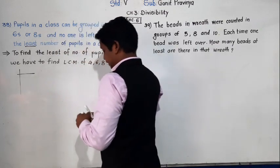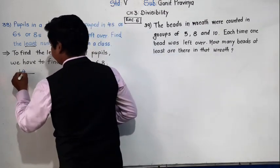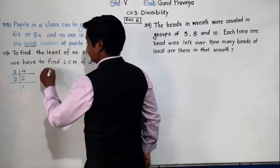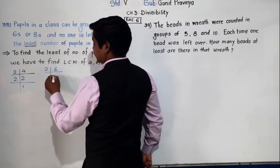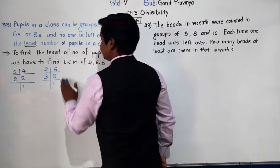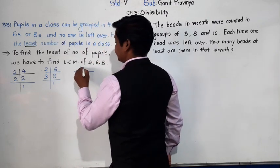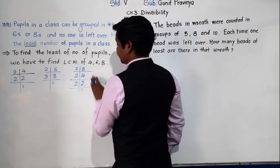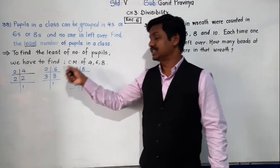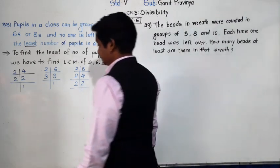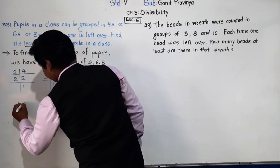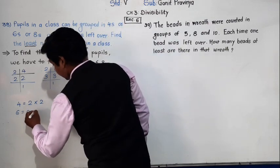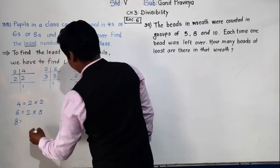First find the prime factors. Prime factors of 4: 2 × 2. Prime factors of 6: 2 × 3. Prime factors of 8: 2 × 2 × 2. So, 4 = 2 × 2, 6 = 2 × 3, and 8 = 2 × 2 × 2.